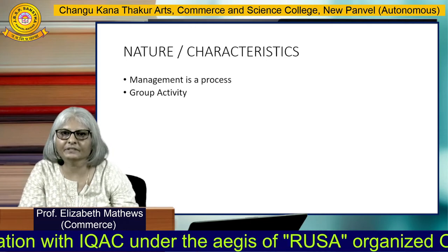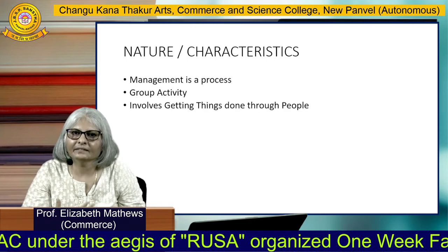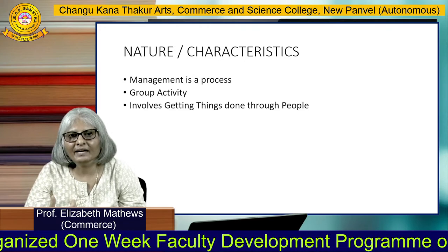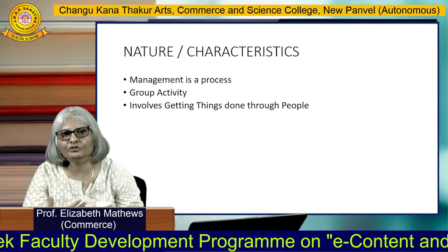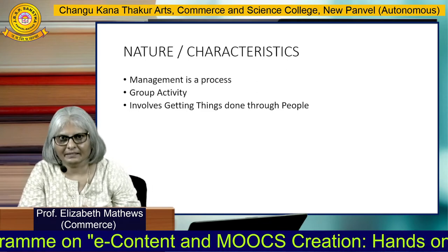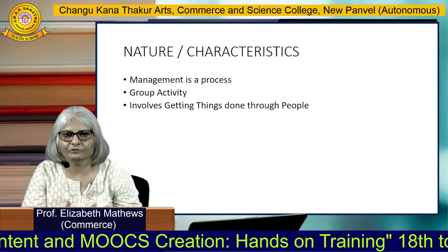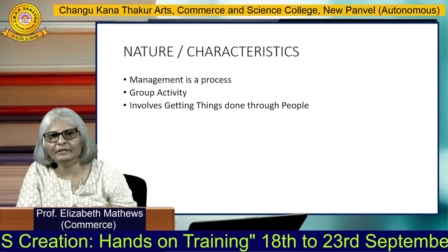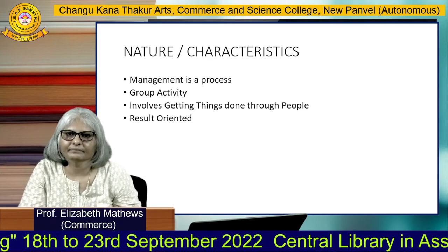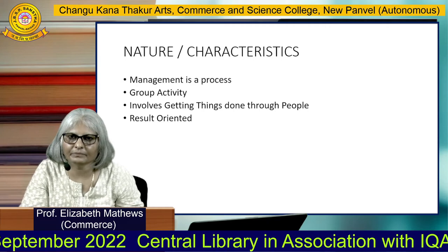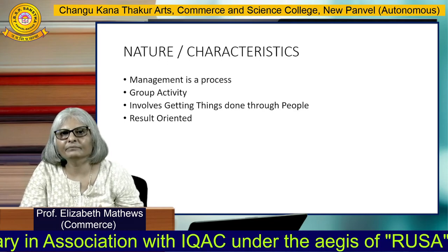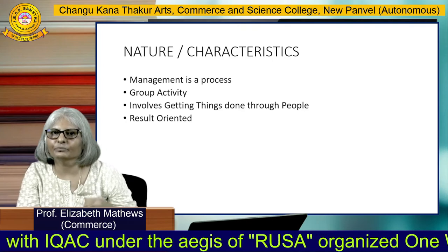Management involves getting things done through people. Even if you want machinery to work, it has to be operated by people, so you must guide them and motivate them. Management is also result-oriented — you manage for some results, to achieve your objectives and targets. Management is not done just like that; there are certain targets and results to be achieved, and that is why you manage.